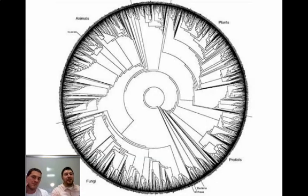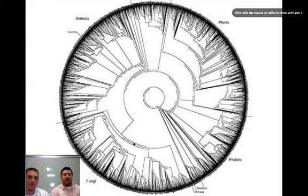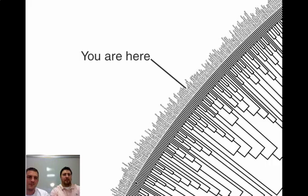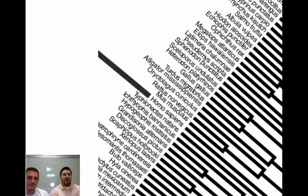Some phylogenetic trees can get pretty complicated. Here's a phylogenetic tree put together by David Hillis of the University of Texas, showing a lot of the organisms on Earth. In the center is where the most ancient organisms are. We can zoom in on different areas of this diagram — it's a really huge diagram, and these phylogenetic trees can get very complicated, but pretty neat too.